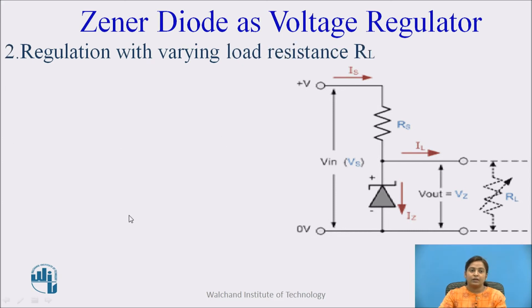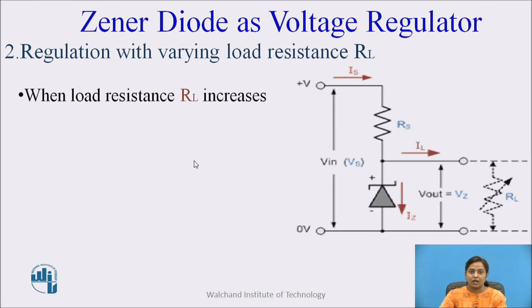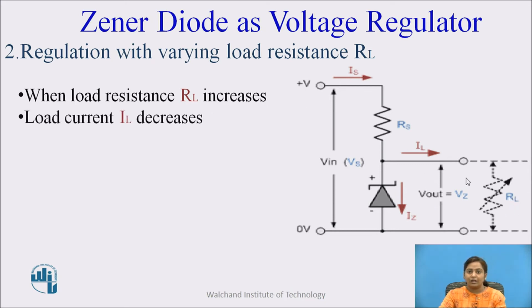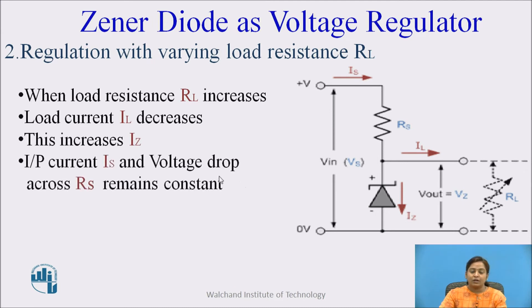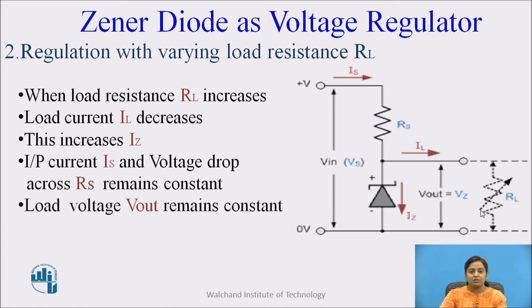Now the second head: regulation with varying load resistance RL. When the load resistance RL increases, the load current IL decreases. Due to this, the input current IS remains the same, and the output voltage remains constant. When the load resistance RL decreases, then IL increases and this will increase the Iz value, because the input current IS is the same. Load voltage again remains constant.